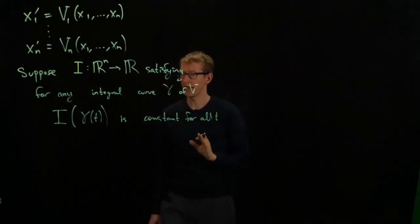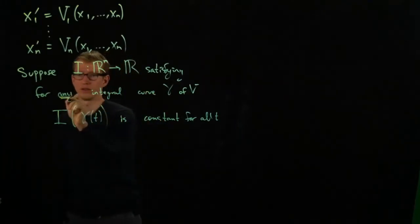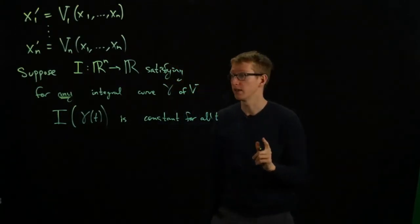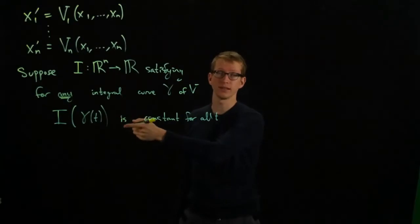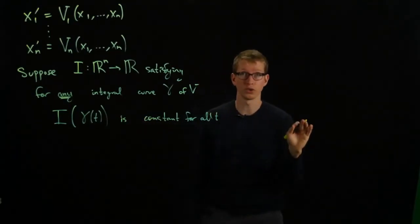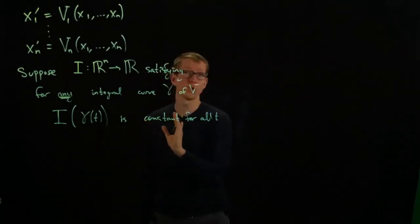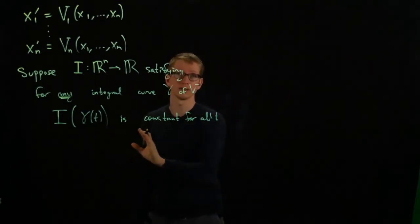If I have such a function and it satisfies the condition that for any integral curve, then it's constant. I don't mean that this number is the same for another integral curve. I just mean that for a given integral curve, then this is constant for all time.